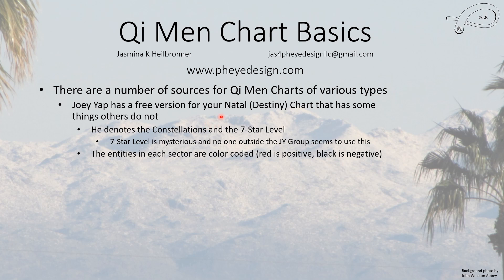Joey Yap has a free version for your natal chart, which he calls the destiny chart, and he does some things that others don't. The nice thing is it is free, though you can only really get your destiny chart free. He also gives you the current hour chart on a different page, but that doesn't do most people very much good. He denotes the constellations and something he calls the seven star level — the constellations being Chinese versions of the star constellations we know in the west. The seven star level is very mysterious; he has not publicly described how he gets this and no one outside the Joey Yap group seems to use it.